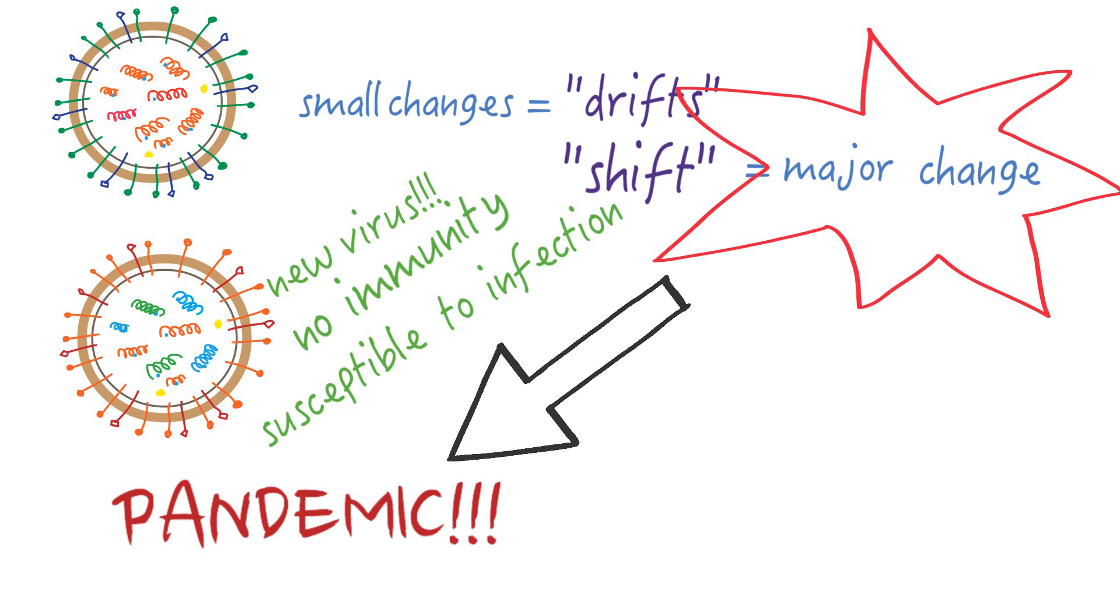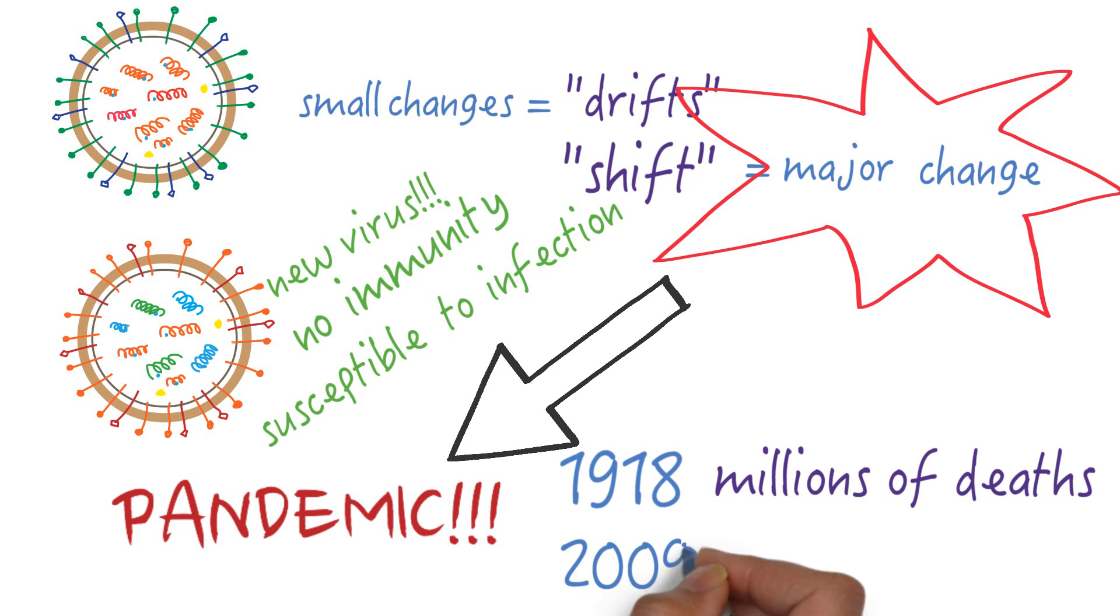The largest flu pandemic was in 1918, killing up to 50 million people. The most recent pandemic was in 2009.